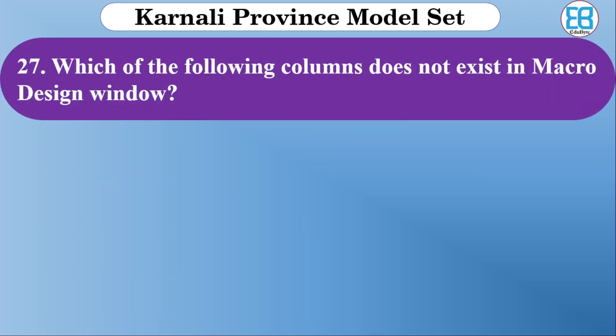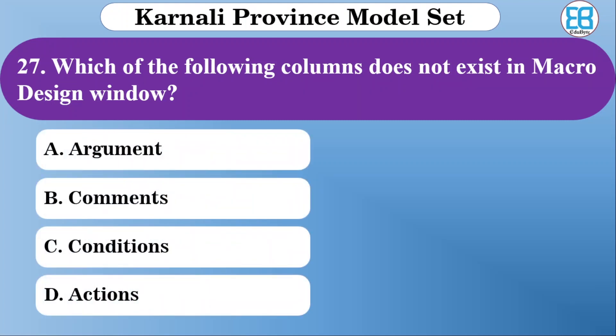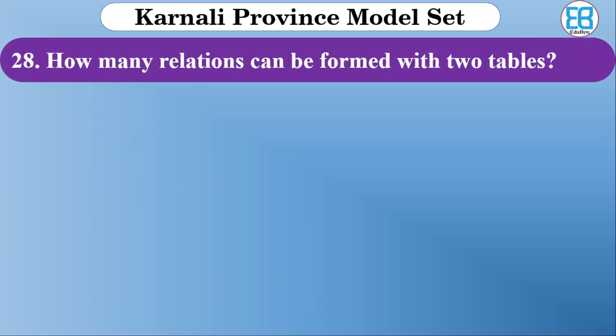Which of the following columns does not exist in a macro design? The options are arguments, comments, conditions, and actions. The correct option — meaning the one that does NOT exist — is condition.